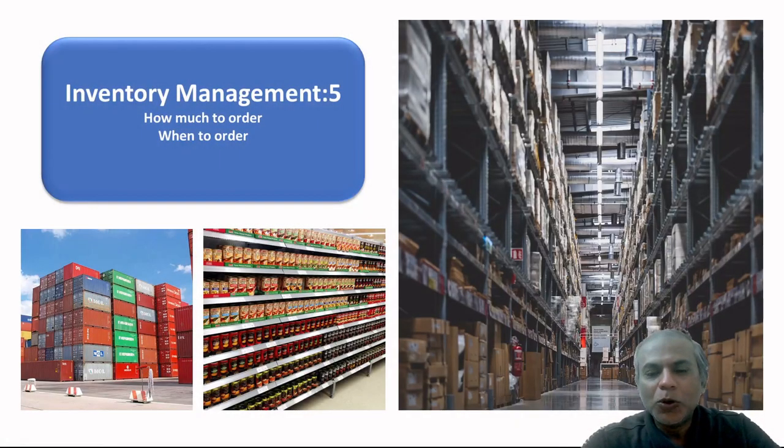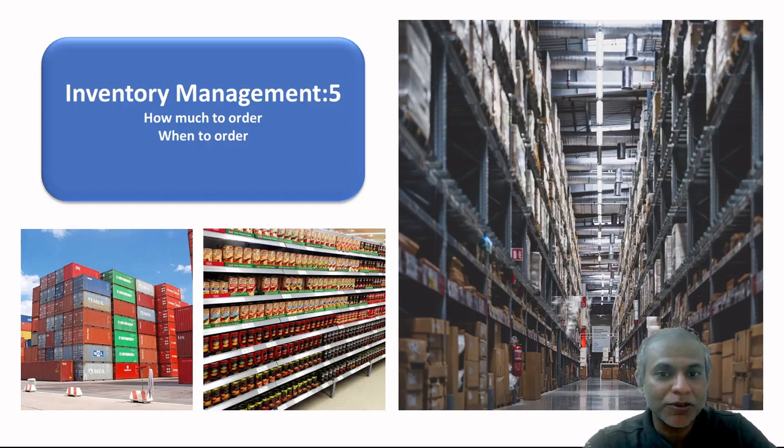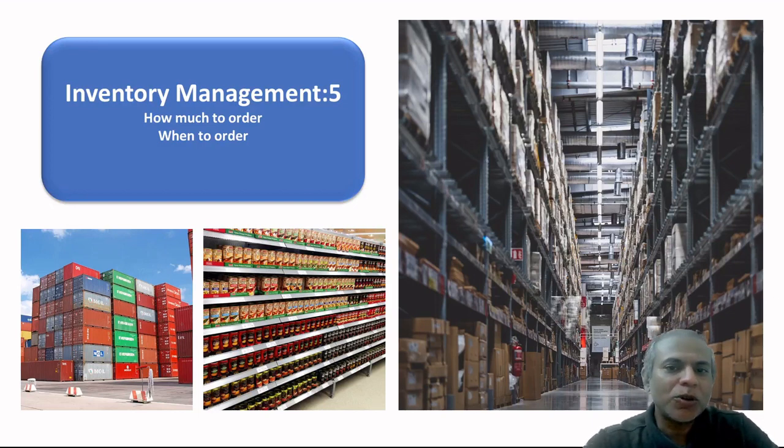In the previous video we looked at some informal but very good systems which tell us how much to order. For some items we order very little quantity, we're okay with frequent ordering and the associated cost. For other items we order in bulk, a huge batch together, so we can save on frequent ordering and transportation cost. In this video I'm going to take you through some formal systems to get that done.